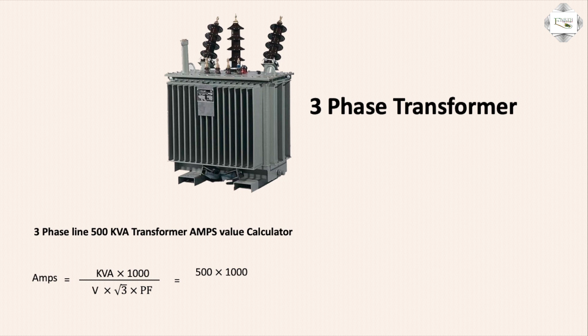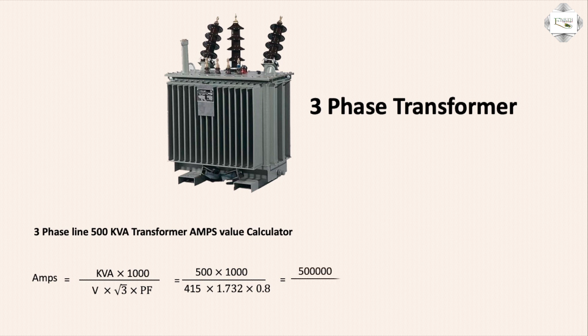Substituting values: 500 into 1000, divided by volt 450, into root 3 value 1.732, into power factor value 0.8 lag.